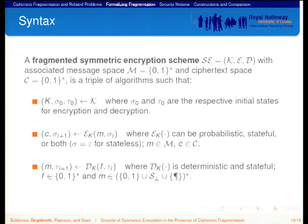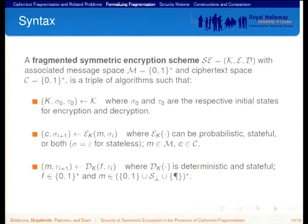The main difference is in the decryption algorithm. The decryption algorithm takes a ciphertext fragment and a decryption state, and outputs a string m and the updated decryption state. The decryption algorithm is required to be deterministic, and to cater for fragmentation it inherently must be stateful. The output is a string over an alphabet that is the union of the binary alphabet, a set of error symbols including sigma-perp and s-perp, and a special end-of-message symbol used to indicate boundaries between messages.